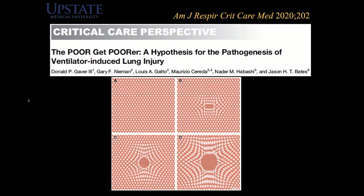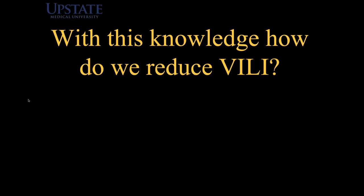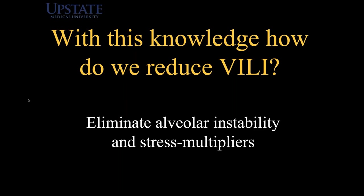We recently published a paper analyzing this phenomenon. In a homogeneously ventilated lung, the alveoli are stable. With a small stress multiplier, the area of normal tissue being over-distended and subjected to large dynamic strain is significantly larger than the stress multiplier itself. If we make the stress multiplier bigger, this damaged area expands even further. So with this knowledge, how are we going to reduce ventilator-induced lung injury? If we can get rid of these stress multipliers and alveolar instability, we'll accomplish the mission. We've used tidal volume, plateau pressure, PEEP, and recruitment maneuvers — they haven't worked. The missing component is time — the time that inspiratory and expiratory components are applied during the mechanical breath.